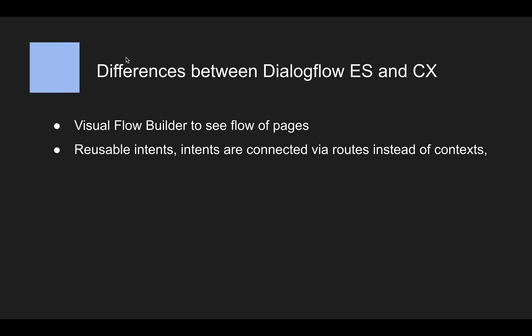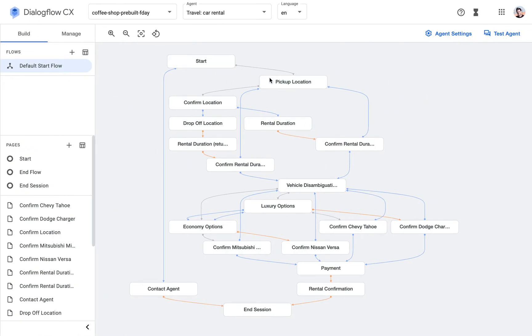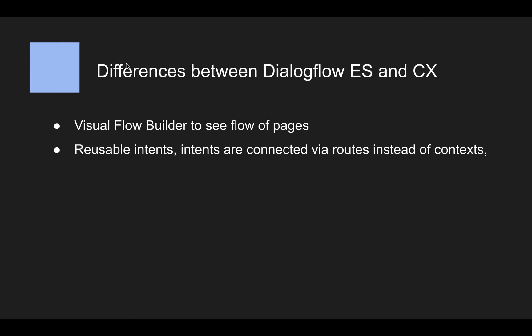The next thing is that the way intents work has changed very much. In Dialogflow ES, intents used to be the main building block to architect the conversation — you could steer the whole flow using intents by connecting them via contexts. In Dialogflow CX the scope of intents is much smaller now. Their only function is to detect the intent of the user, which means you can reuse them in different parts of the conversation. Intents are used inside routes, and a route reflects the state of the conversation. Routes are now the main building blocks you can use to steer the logic of where the conversation goes.